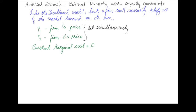We'll now use the idea of mixed strategy Nash Equilibria to analyze a variation on a game that we've already seen. Let's look at the Bertrand duopoly model, but with capacity constraints. This is just like the Bertrand model, except that a firm can't satisfy all of the market demand on its own. Firm 1 will set a price P1, firm 2 will set a price P2, and they will do this simultaneously. We'll assume that both firms have a constant marginal cost of 0.